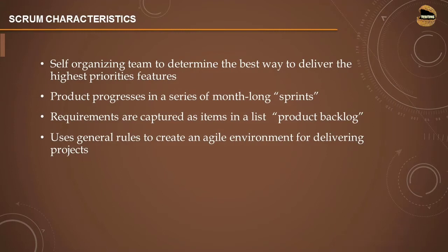The product progresses in a series of month-long sprints, depending on the type of iteration — lasting for a fortnight of 14 days or up to a month, typically between two to four weeks. Requirements are captured as items in a list called the product backlog. We will further detail how a product backlog is created, how tasks are broken down, and how items are picked from it for development and testing. Scrum uses a general rule to create an Agile environment for delivering projects.